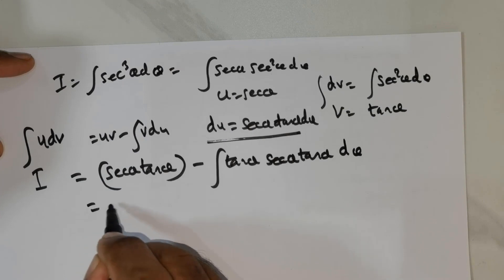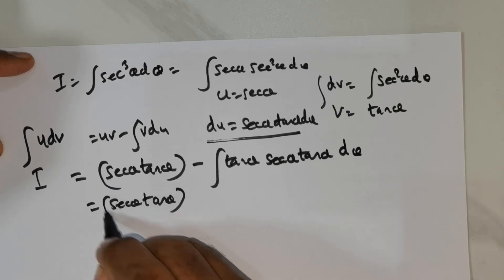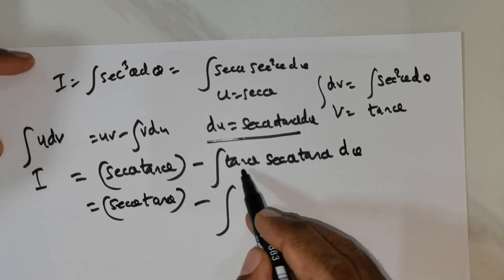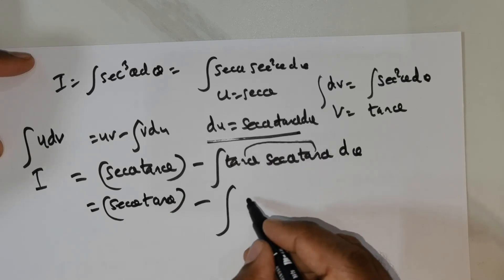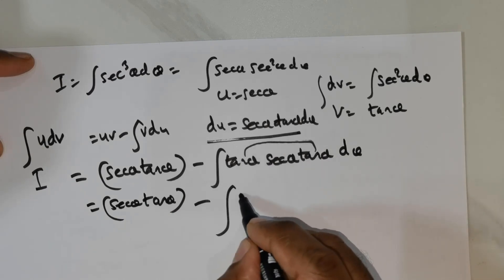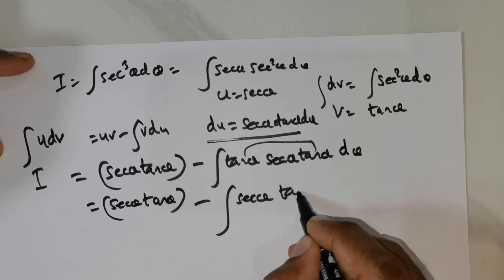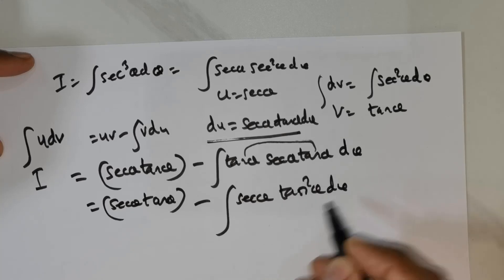This is equal to secant theta tan theta. I'm going to multiply these two together and write it as integral of tan square theta d theta.